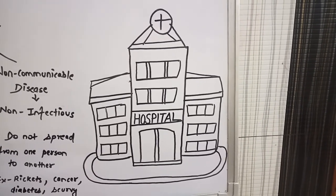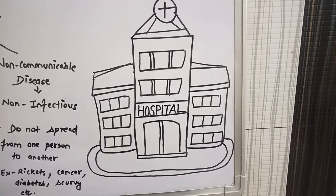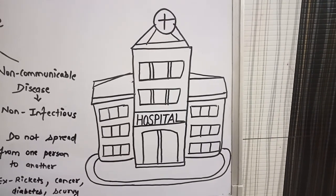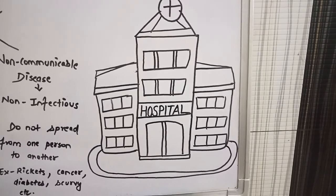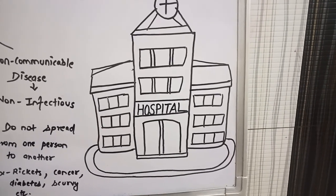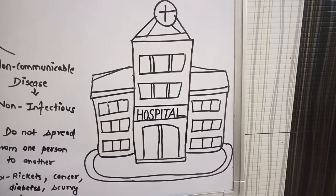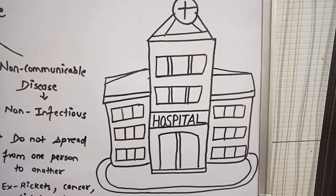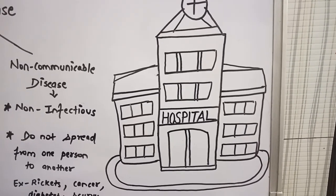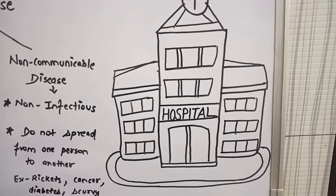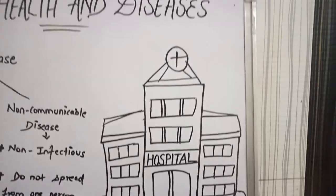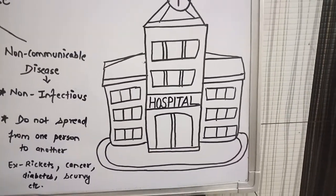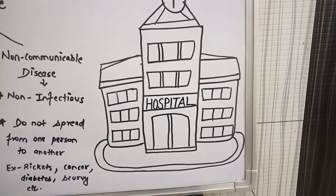Here you can see an image of a hospital. Many hospitals are there in India and almost every part of the world. But what do you mean by a hospital? What do hospitals do for us? Why do we go there? A hospital is a place where a person goes to be healed when he or she is sick, injured, or suffering from any kind of disease, where doctors and nurses help us to recover soon.